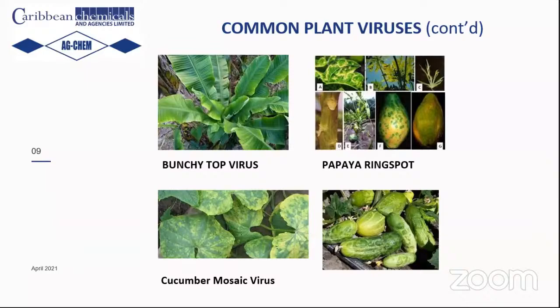Other common viruses seen locally include bunch top virus and ring spot, transmitted by aphid species, as well as cucumber mosaic virus — also aphid-transmitted. The main vectors to watch for are aphids, whiteflies, and thrips. For those growing tomato, sweet pepper, cucumber, or papaya, always be on the lookout for these pests.